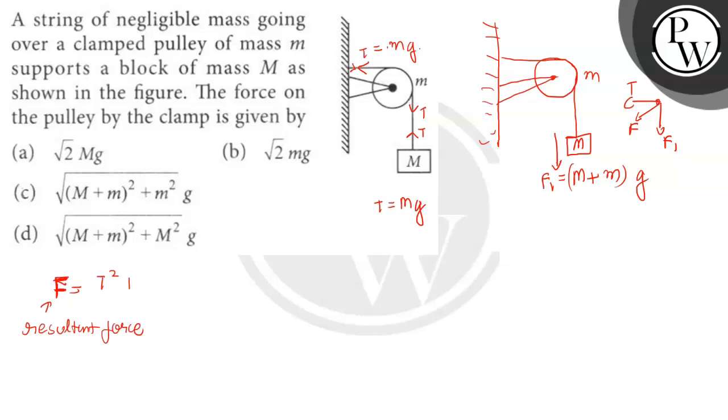So resultant force is square root of T square plus F1 square. This is equal to square root of T square is capital M g whole square plus capital M plus small m into g whole square.